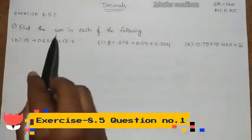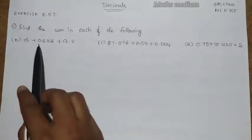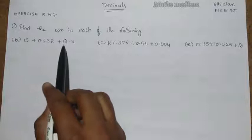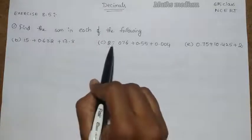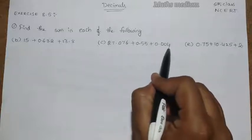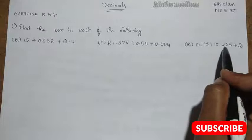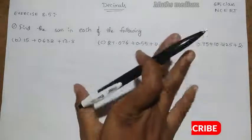Find the sum in each of the following. I took randomly 3 questions: 15 plus 0.632 plus 13.8, 27.076 plus 0.55 plus 0.004, and 0.75 plus 10.425 plus 2. These are the 3 questions.